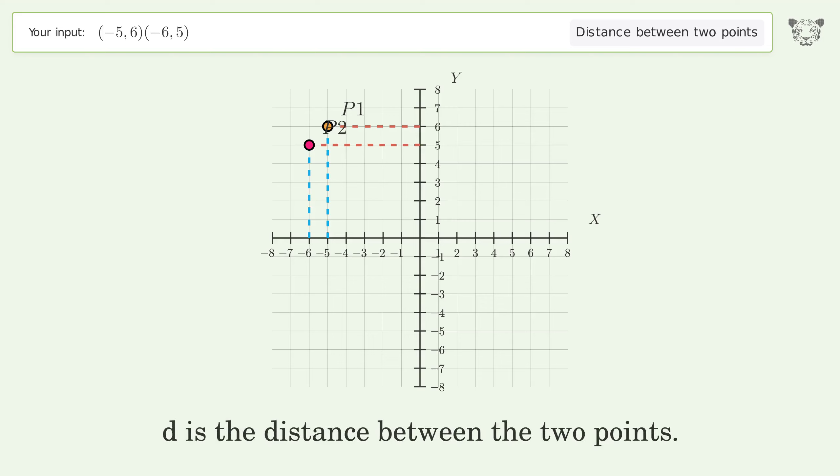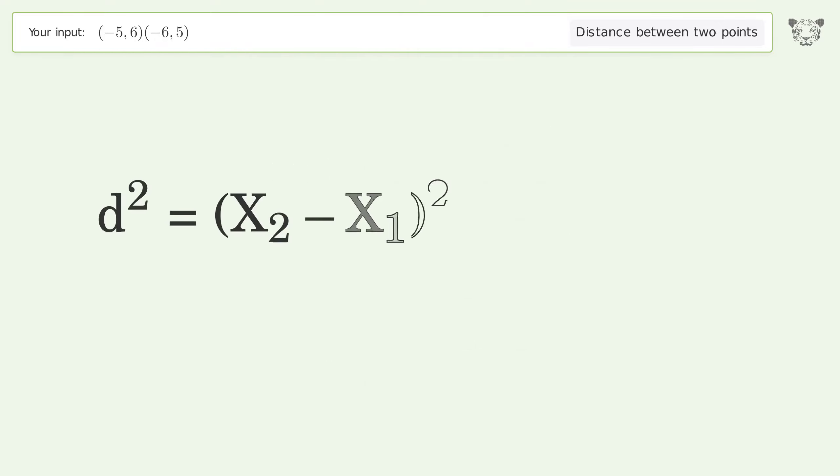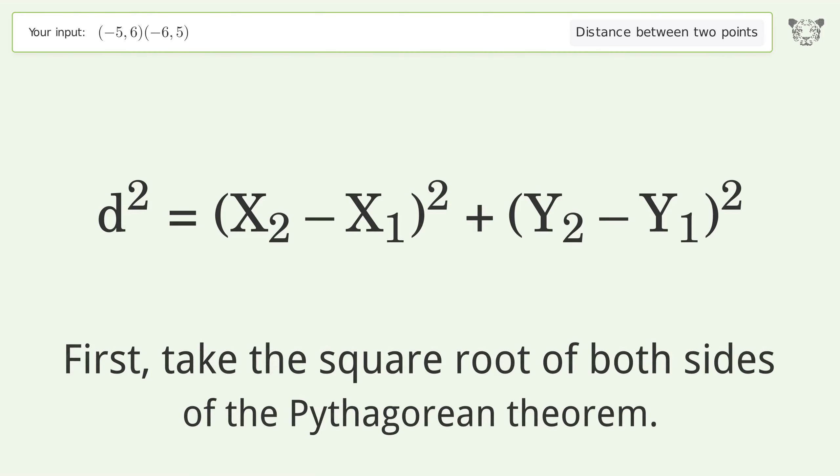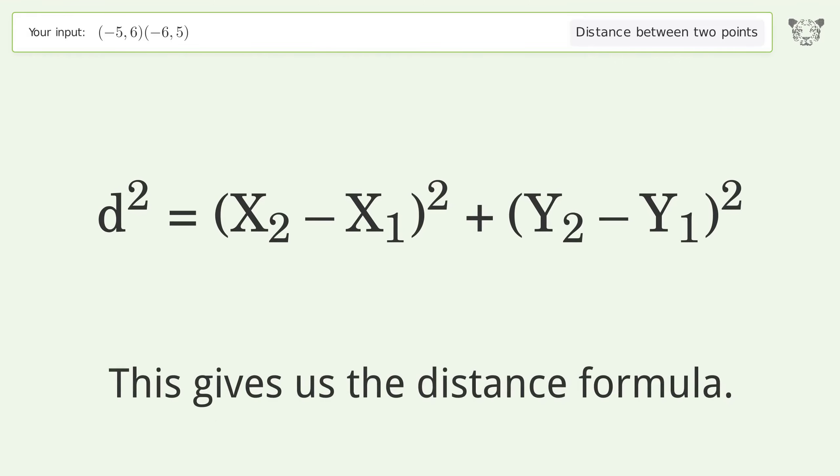d is the distance between the two points. First, take the square root of both sides of the Pythagorean theorem. This gives us the distance formula.